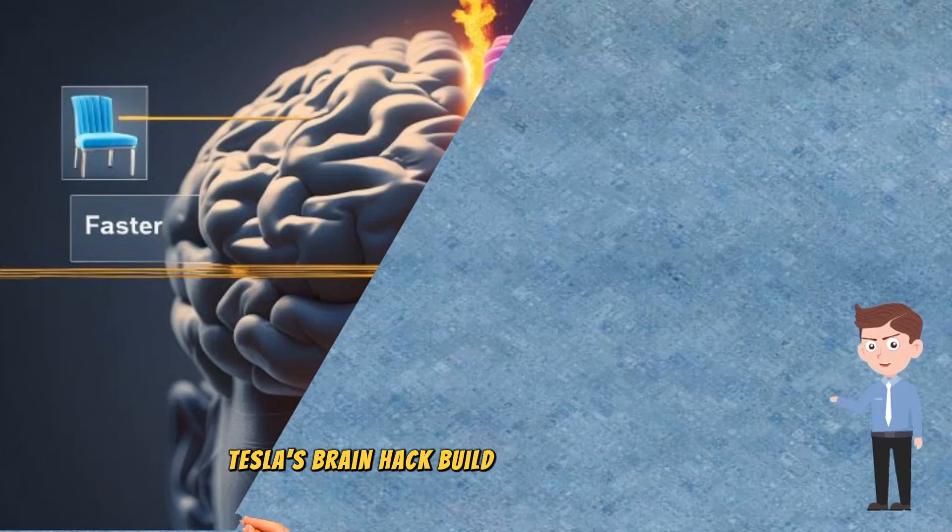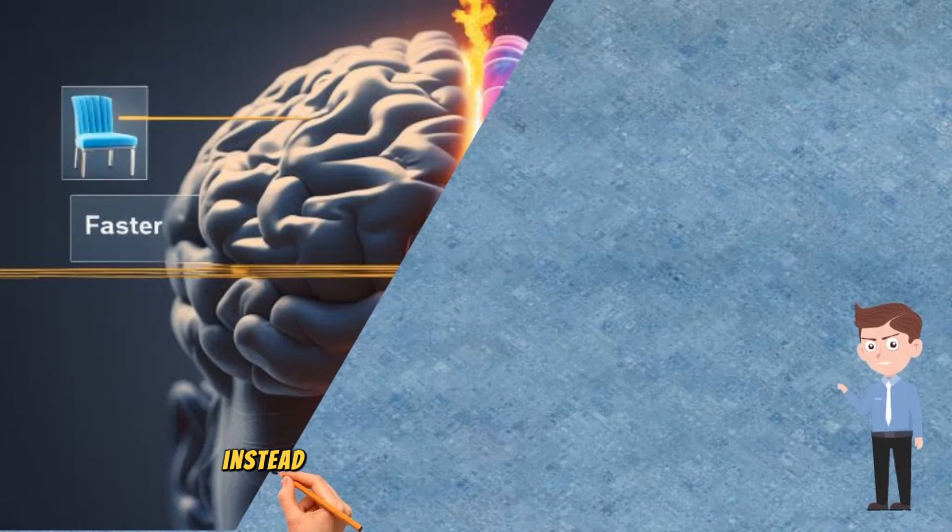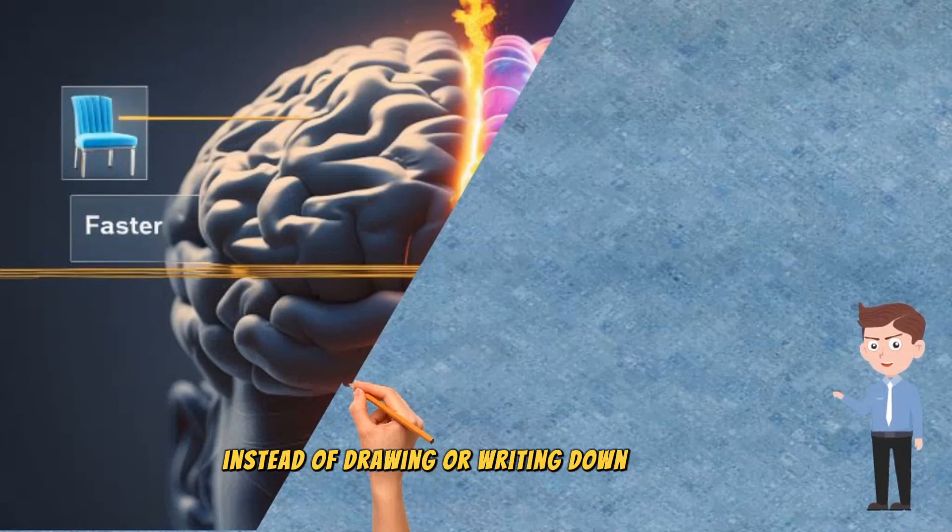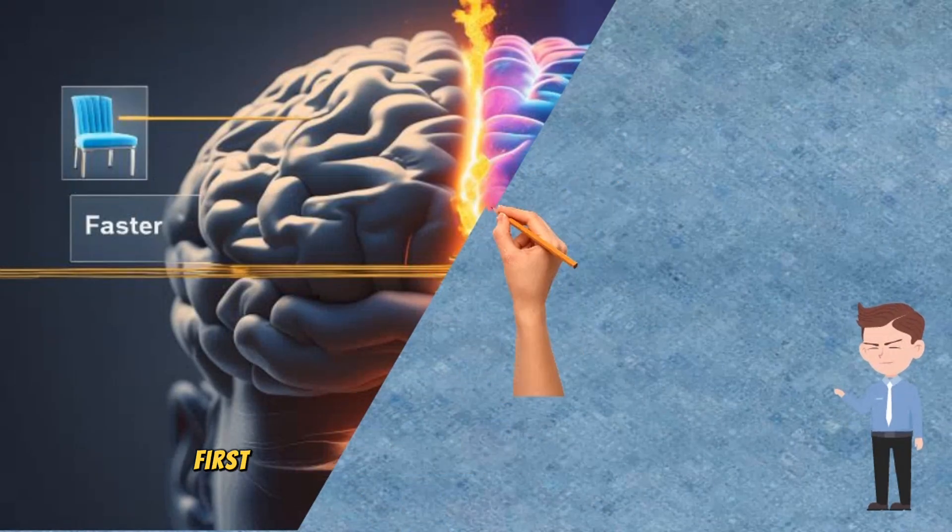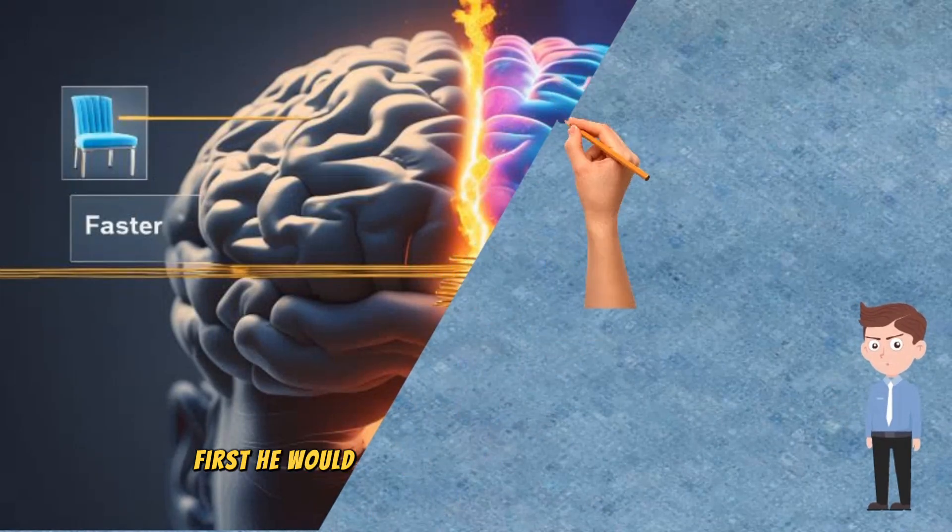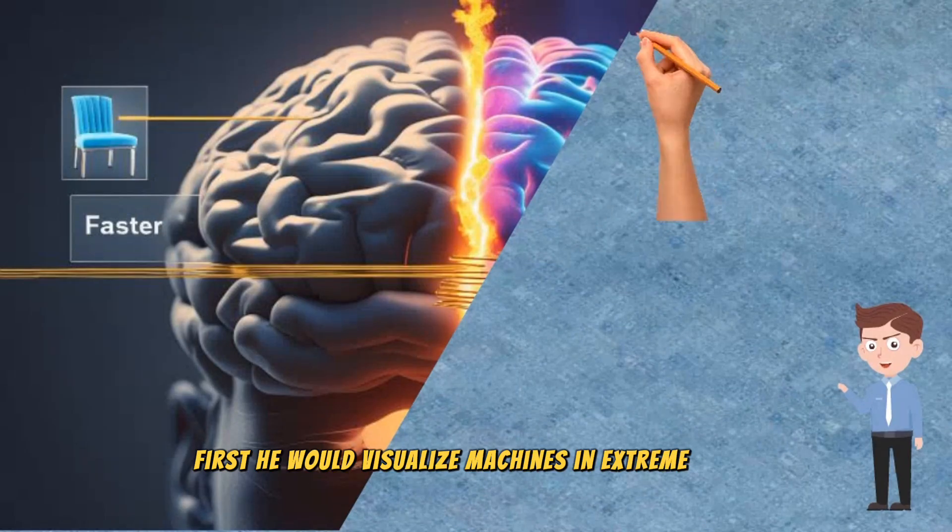Tesla's brain hack. Build it in your mind first. Instead of drawing or writing down his ideas, Tesla built and tested everything inside his mind first. He would visualize machines in extreme detail.